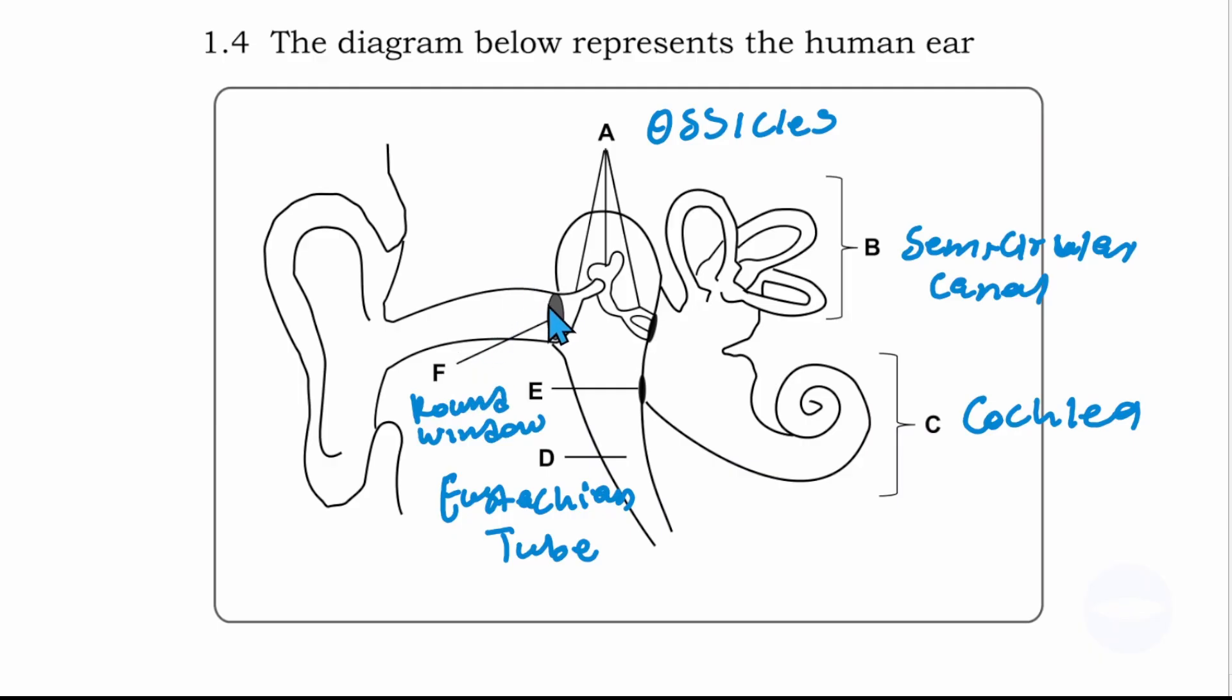Number F is the tympanic membrane. So these are the labels. Before we answer the questions, it's very important to label everything here so that when you answer the questions, it will just flow.